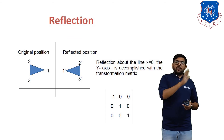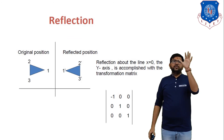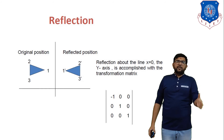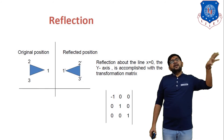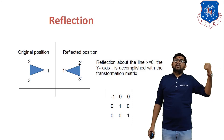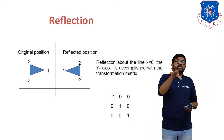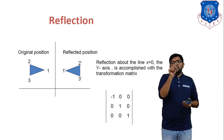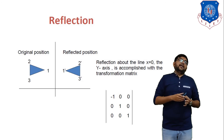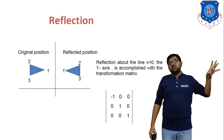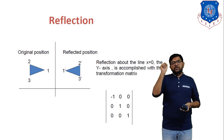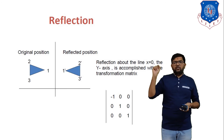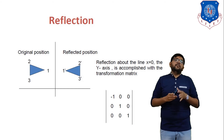Reflection about the Y-axis: if we have any object in the first quadrant, its mirror image is generated in the second quadrant. In the second quadrant, the X-coordinate is negative and the Y-coordinate is positive. Therefore the homogeneous matrix for reflection about the Y-axis is [−1,0,0 / 0,1,0 / 0,0,1]. The −1 indicates that the X-coordinate is negative in the second quadrant.